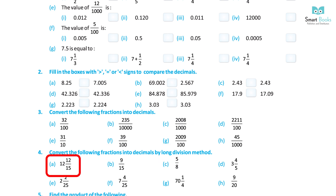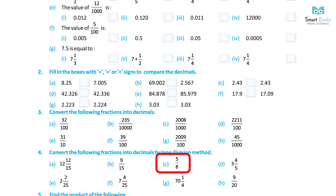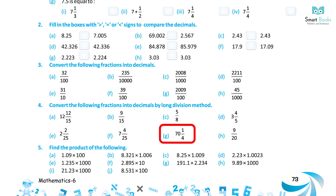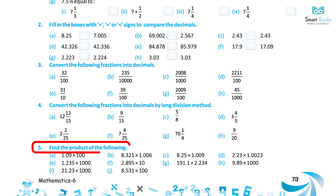Question 4: Convert the following fractions into decimals by long division method. A. 192 upon 15 — Solution: 12.8. B. 9 upon 15 — Solution: 0.6. C. 5 upon 8 — Solution: 0.625. D. 34 upon 5 — Solution: 6.8. E. 22 upon 25 — Solution: 0.88. F. 74 upon 25 — Solution: 2.96. G. 71 upon 4 — Solution: 17.75. H. 9 upon 20 — Solution: 0.45.